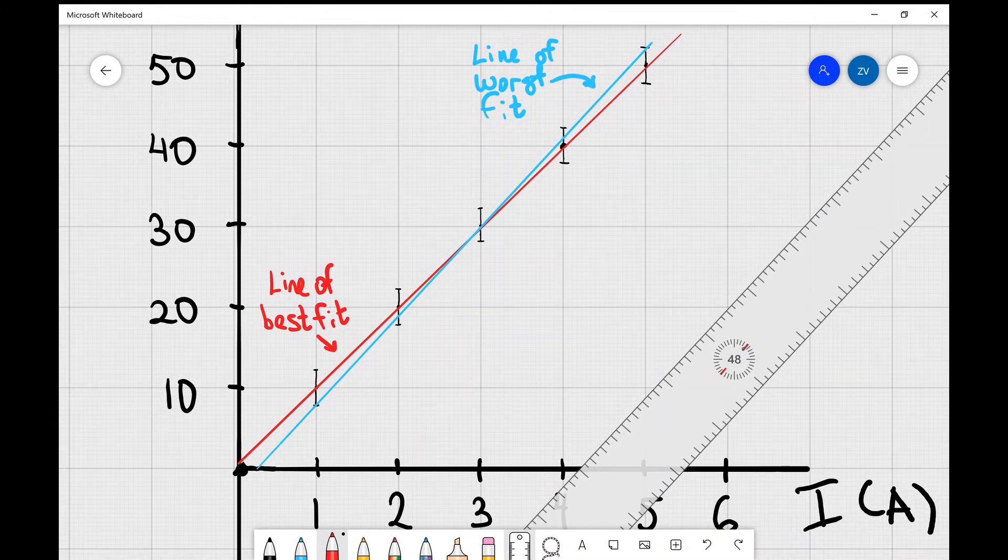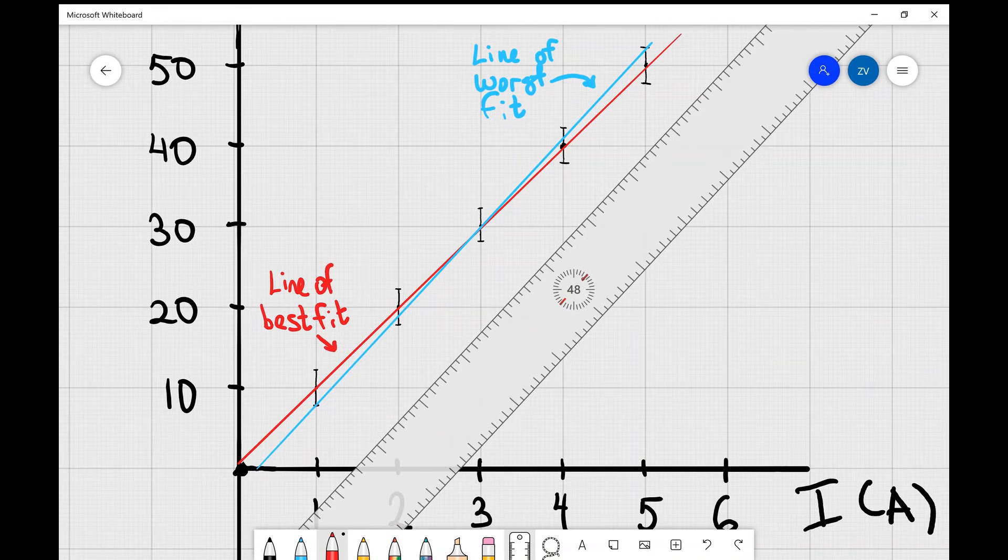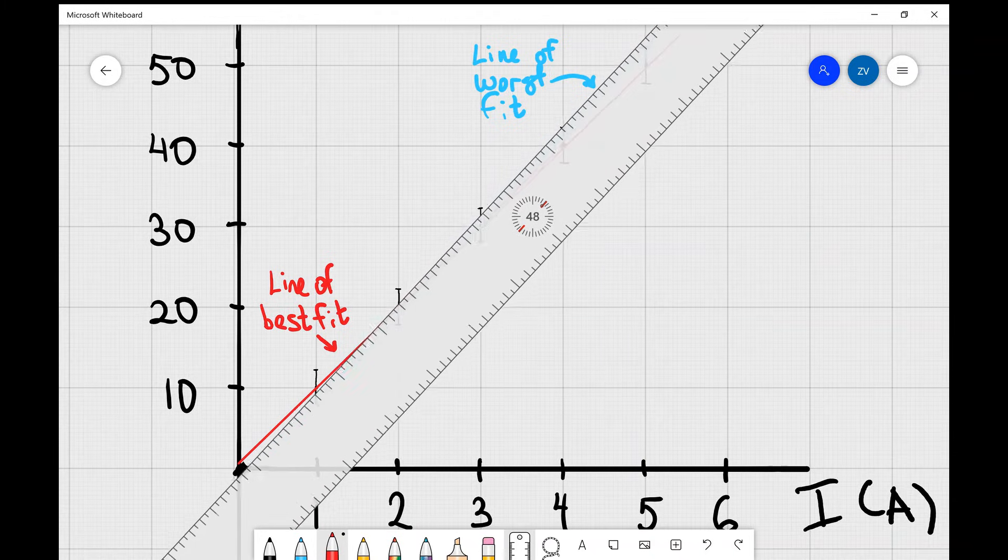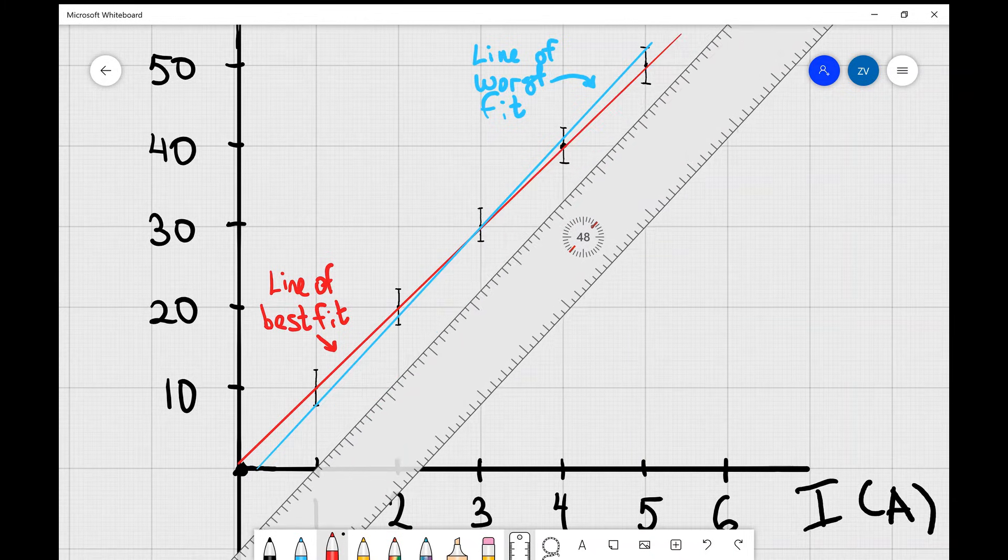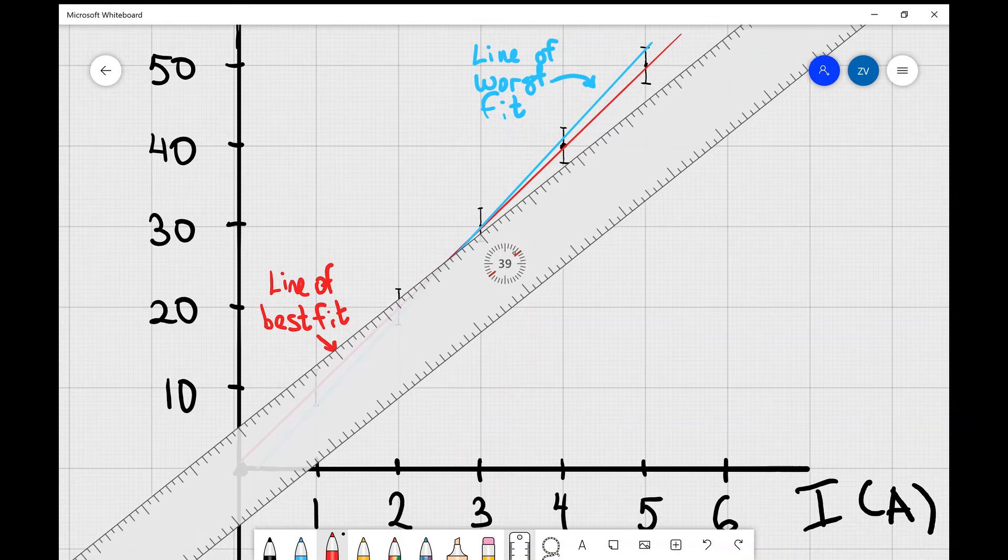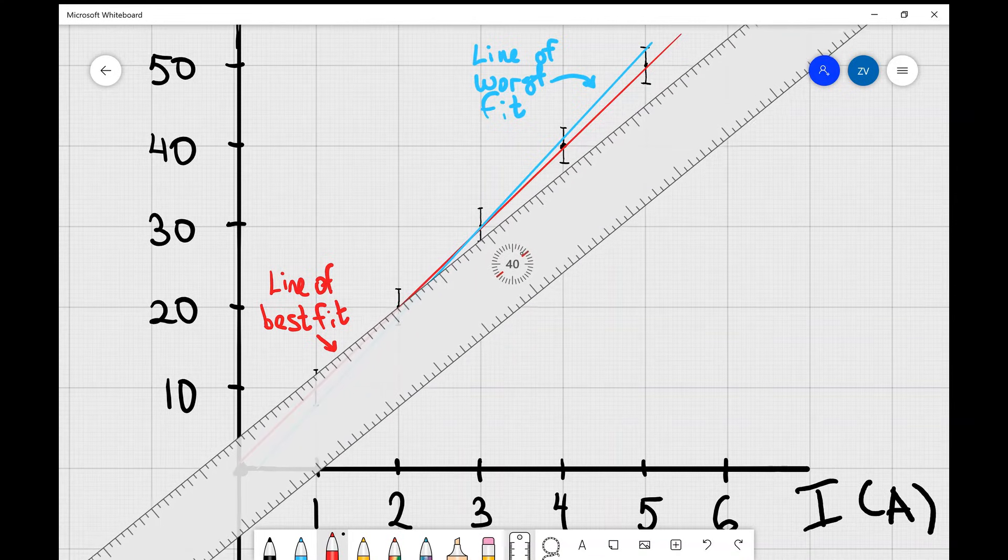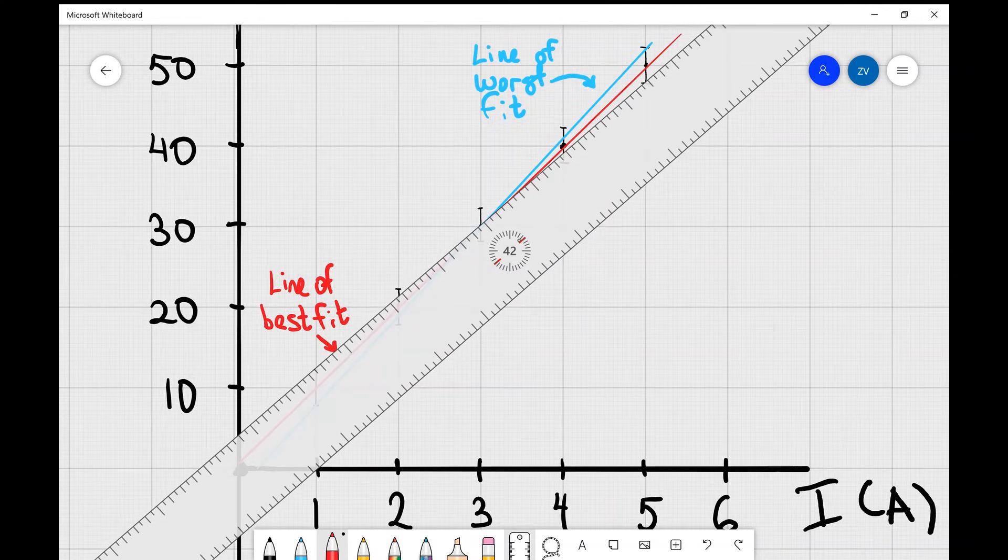Additionally, just a little note that you don't always have to go from the bottom of the bottom error bar to the top of the top error bar. You can also go the other way around, as long as you go within the two opposite ends of the error bar. For example, I can start at the top of the bottom error bar and go to the bottom of the top error bar. That's also the other line of worst fit. I'm not going to draw it now, but I just thought I would mention it as another equally valid possibility.